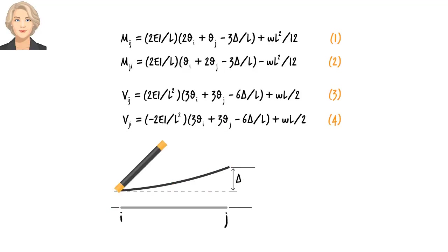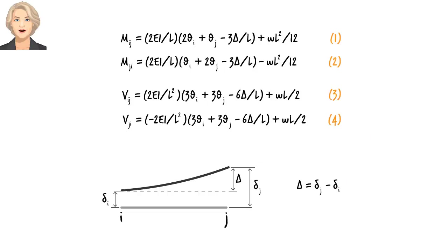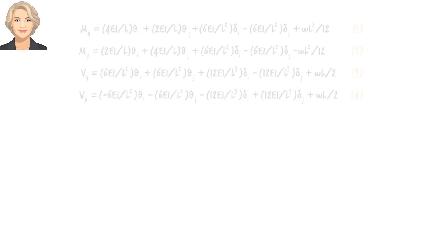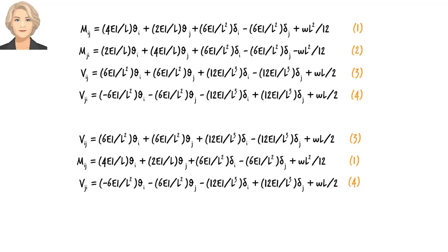If we denote vertical displacement at end i as delta_i and the displacement at end j as delta_j, then we can write delta equals delta_j minus delta_i. Substituting delta_j minus delta_i for delta in equations 1 through 4, we get the updated equations. Now I am going to reorder these equations before rewriting them in matrix form.